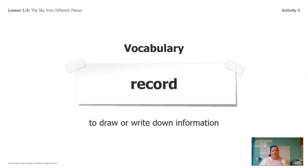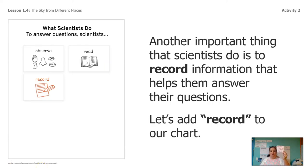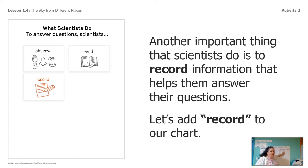So while we're observing these different webcams, we need to record — draw or write down the information that we see. If you have a piece of paper and a pencil, or the packet that goes along with this unit, this is the time you want to have those out. If you don't have those things, don't worry because I'm going to be recording on the wall here. Recording is a really important thing that scientists do — we observe, read, and record. Today we're going to observe and record, and one more thing you'll find out about later.